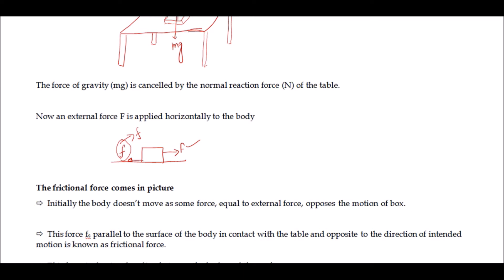The force equal to the external force opposes the motion of this box — this force which opposes the motion of the box is called frictional force and denoted by fs. It is important to note the direction of this frictional force: it is always opposite to the applied force. Whenever there is a chance of relative motion or the object attempts to move, the frictional force develops and opposes the relative motion or direction of intended motion.